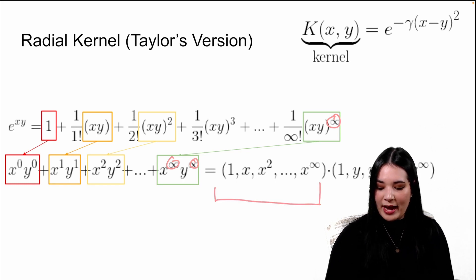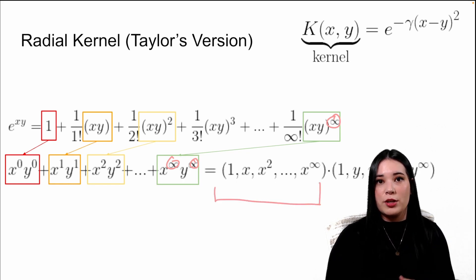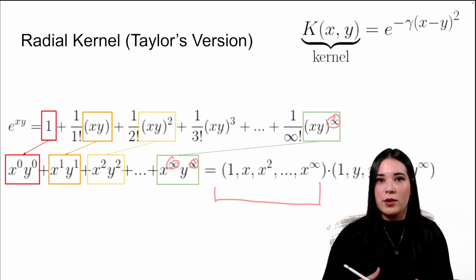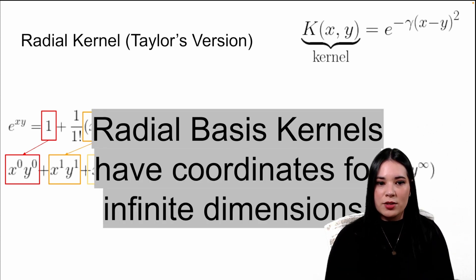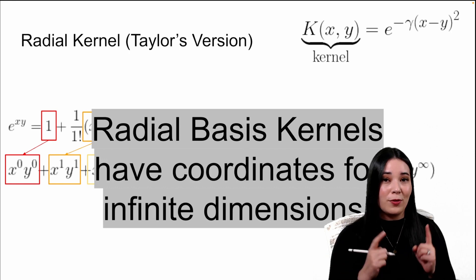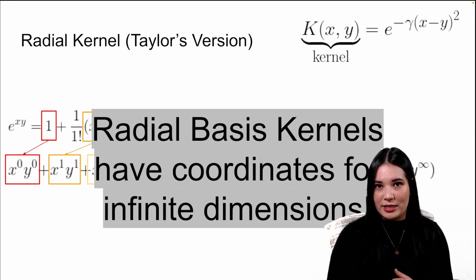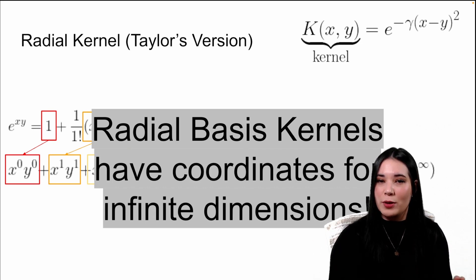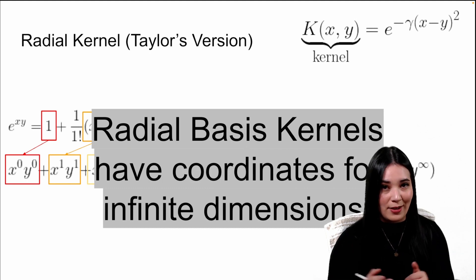Essentially, it's as if we calculated new features where the first feature is one for every variable, the second feature is itself, the third feature is the variable squared and so on, up to an infinite number of dimensions. Radial basis kernels basically have coordinates for infinite dimensions, which wouldn't actually be possible to calculate if it weren't for the kernel, which calculates the relationship between two points as if they were in those dimensions without actually forcing us to calculate those dimensions, since there is an infinite amount of them.